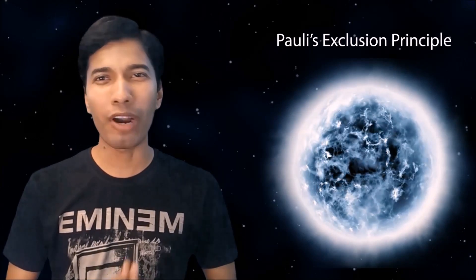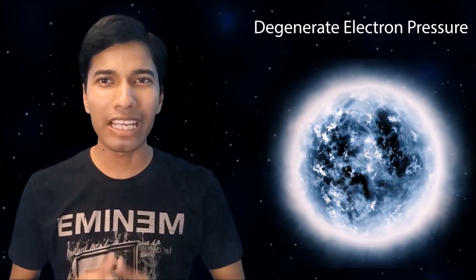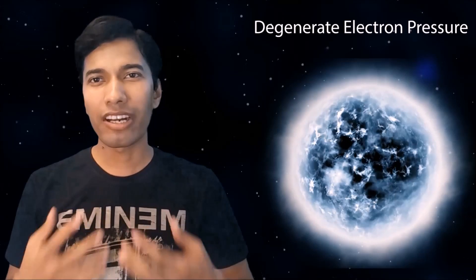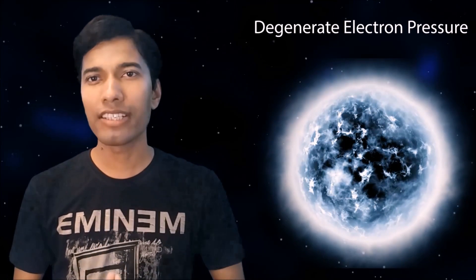Pauli's exclusion principle is a quantum mechanical phenomenon. This basically says that any two identical particles cannot stay in the same place at the same time. In a white dwarf star, the temperature is so high that all electrons are stripped from their atoms, and then gravity contracts those electrons so densely that it runs into Pauli's exclusion principle. This is known as degenerate electron pressure. Now, white dwarf stars are very small and their brightness is also very low. So how do you detect white dwarf stars?